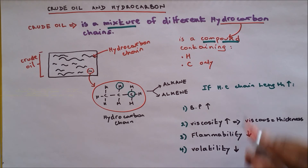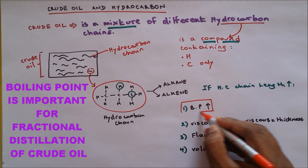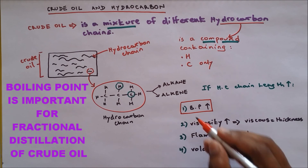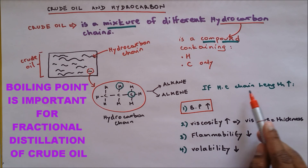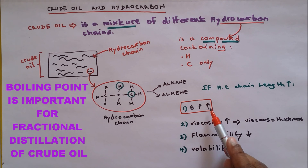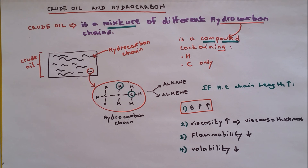Among all these properties, the important one you need to pay attention to is the boiling point. As the length of the hydrocarbon chain increases, boiling point increases. This is very important for separating crude oil into different fractions using fractional distillation.